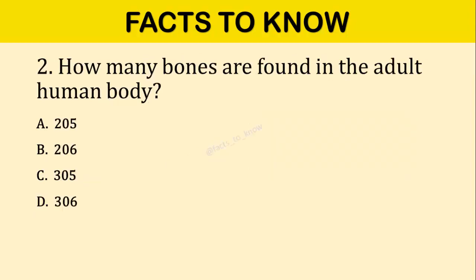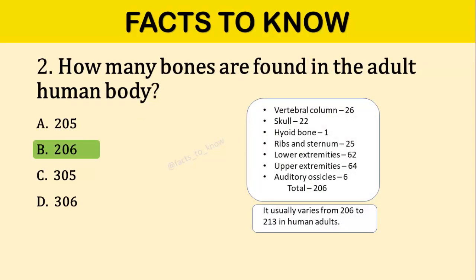Question number two: How many bones are found in the adult human body? The correct answer is option B: 206. It usually varies from 206 to 213 in human adults.